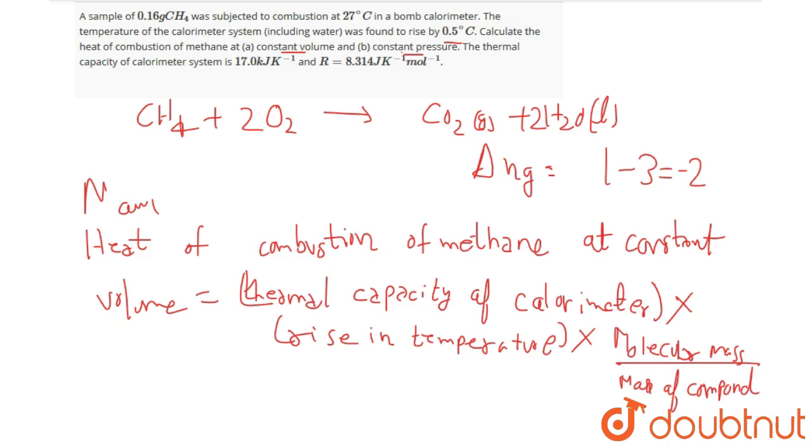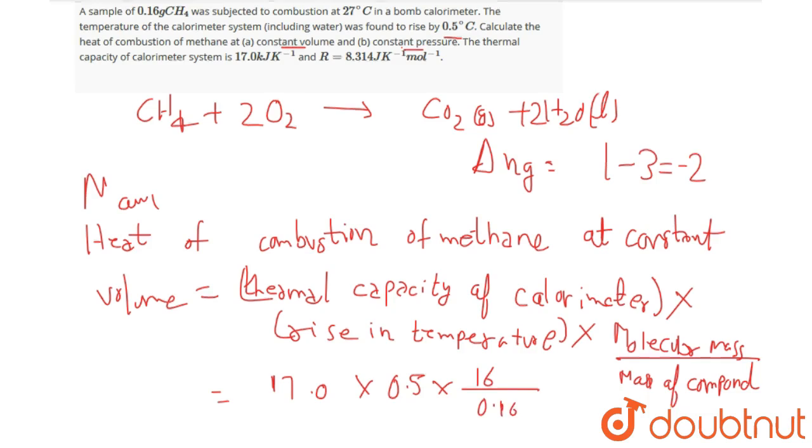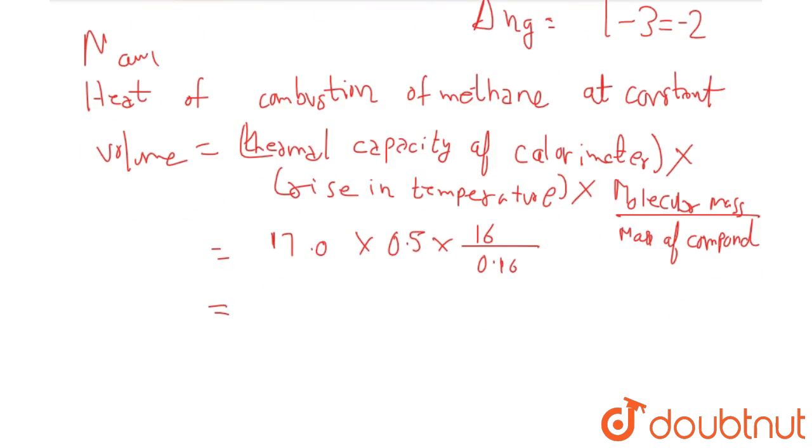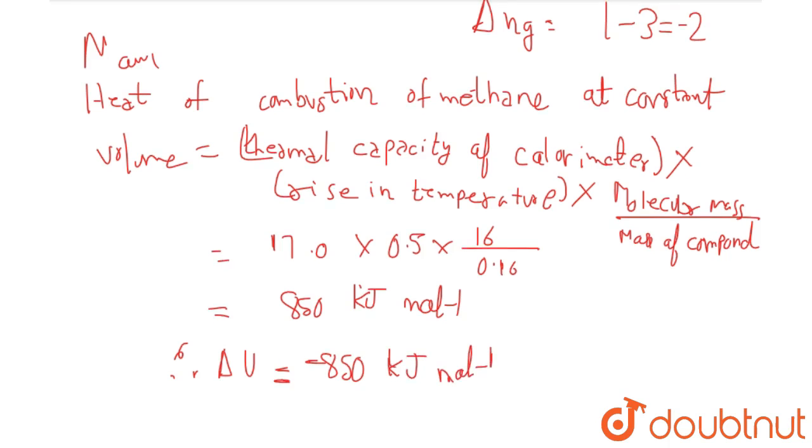So if you put the corresponding values, thermal capacity is given as 17.0, rise in temperature is 0.5, molecular mass is 16, and mass of the compound is given as 0.16. So if we simplify this, it will come 850 kilojoule per mole. Therefore, heat of combustion of methane at constant volume, that is delta U, equals to minus 850 kilojoule per mole.